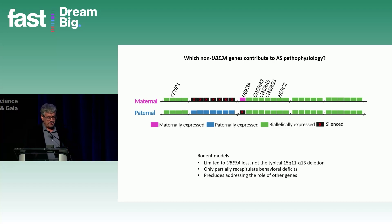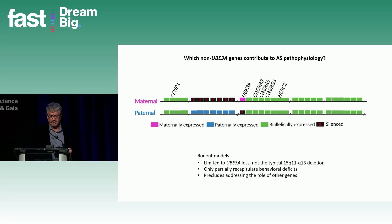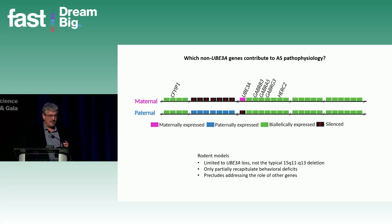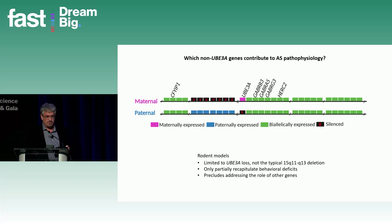In terms of which genes may contribute in addition to UBE3A, all of those genes expressed from one copy in the deleted region may play an important role in Angelman pathophysiology. We've learned a lot from rodent models, but up to this point all of the mice and rat models for Angelman syndrome are limited to the loss of UBE3A — they're a great model for non-deletion Angelman syndrome, but they really don't model the typical deletion. There are some new mouse models in the pipeline, but these models have really not allowed us to address the role of these other genes.